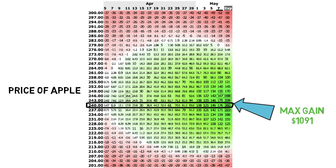The downside is that Apple can fly up and down and you can end up losing money. Let's say Apple suddenly goes on a tear all the way up to $400 on May 5th. This would mean your option is now worth 50% less, resulting in a $204 loss if you were to close that portion at that point.